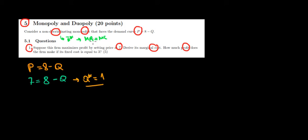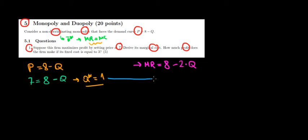We also know the monopolist uses the property that marginal revenue equals marginal cost. To find the marginal cost, we must first find the marginal revenue. The marginal revenue has the same intercept as the demand function but twice the slope, so it's going to be 8 minus 2 times the quantity. Since quantity equals 1 in equilibrium, marginal revenue is 8 minus 2 times 1, which equals 6. And since marginal revenue equals marginal cost, the marginal cost is also 6.